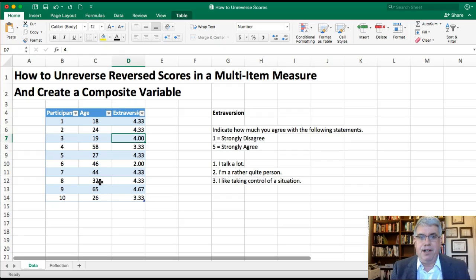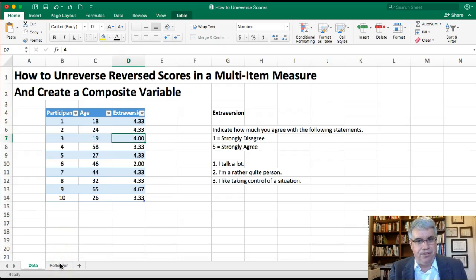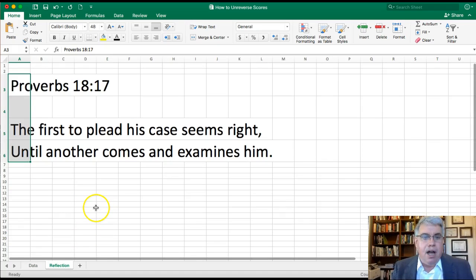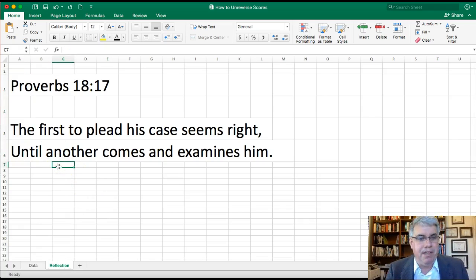Now at Azusa Pacific, something that we like to do, because we're a Christian college committed to following Jesus Christ, is we like to reflect on some of these ideas and link them to biblical concepts. So if this doesn't interest you, you can turn the video off now. But if it does, on this next tab here, this problem made me reminded of a verse in Proverbs. The book of Proverbs in the Old Testament says, 'The first to plead his case seems right, until another comes and examines him.' And the idea here is that humans have biases, and we have self-serving biases. We like to present ourselves in the most positive light.